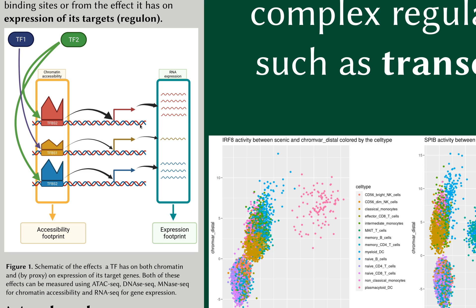The change in RNA expression we can also detect using RNA-seq. Recent advances in single-cell technologies have allowed us to profile both chromatin accessibility and gene expression in individual cells. So now we are able to infer transcription factor activities using two independent data modalities, and we can use them to compare each other and see which one is more informative about the biology of gene regulation.